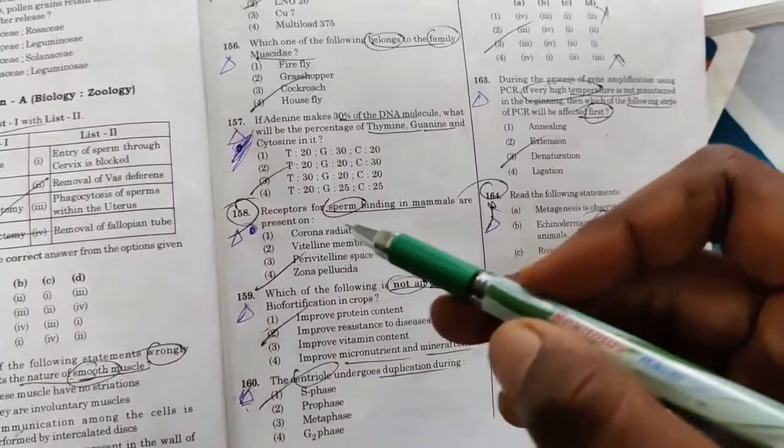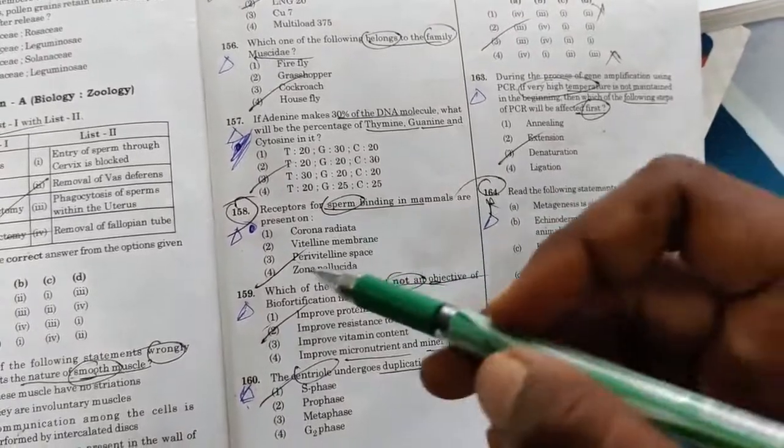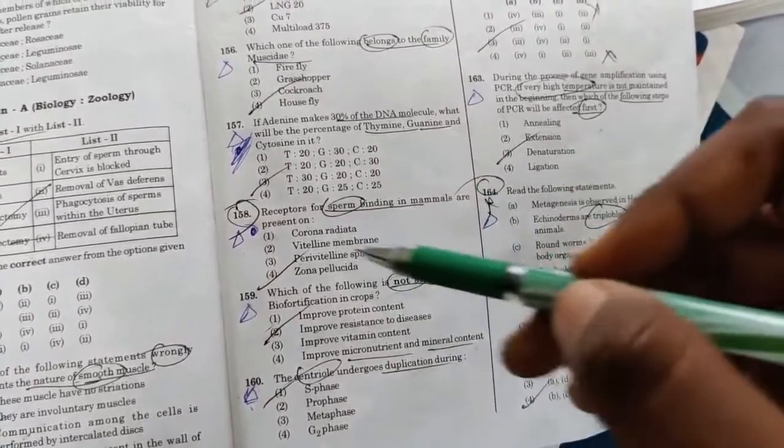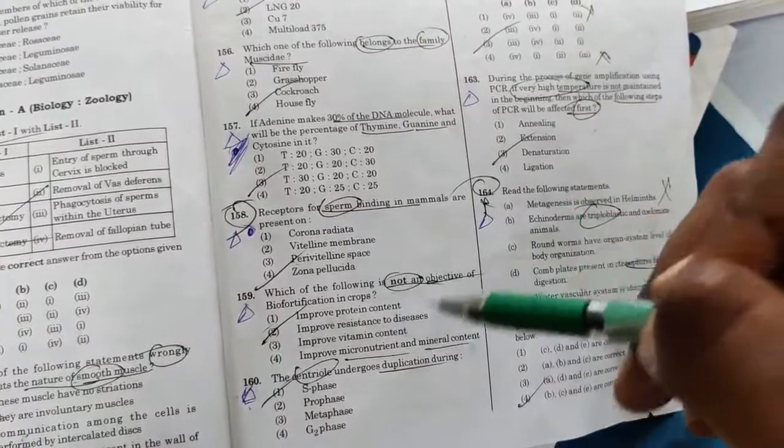This one, receptors for sperm binding in mammals - it was a bit of guesswork, but still I had somewhere deep in my mind that it is zona pellucida only.